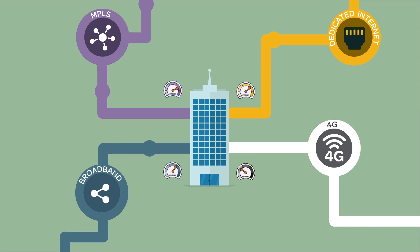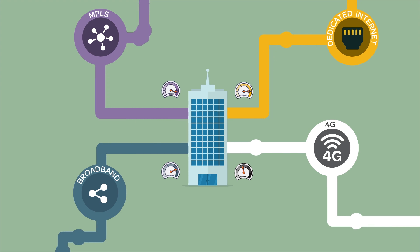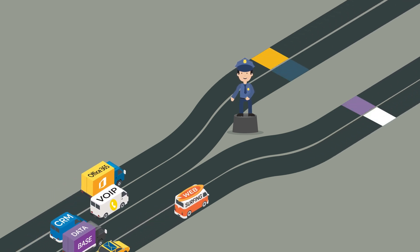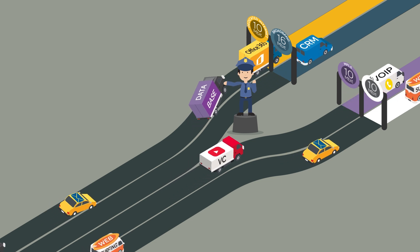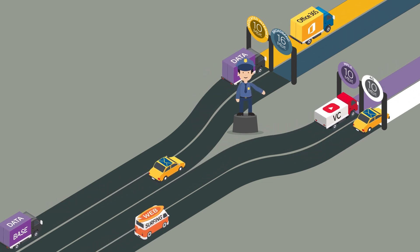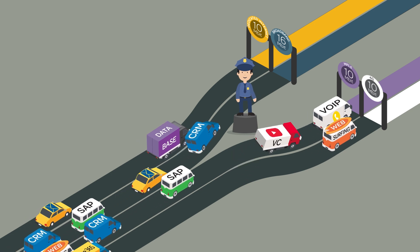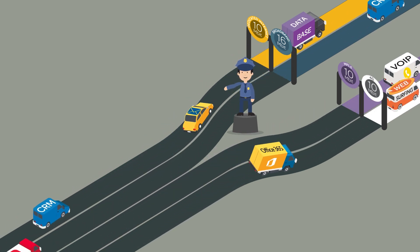If we monitor the performance of every link of this hybrid WAN, we are able to tell an application which path is best at any given time. Think of it like a policeman directing a busy traffic junction. We tell the policeman which traffic is most important and which traffic isn't. The policeman sends the most important traffic down the least congested road that offers the fastest route.